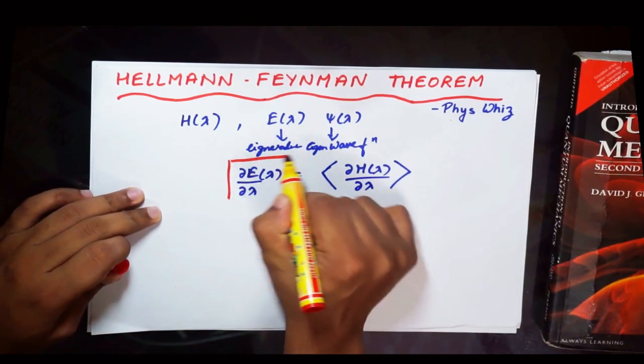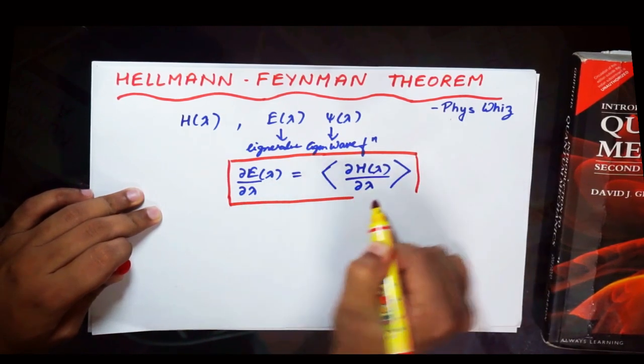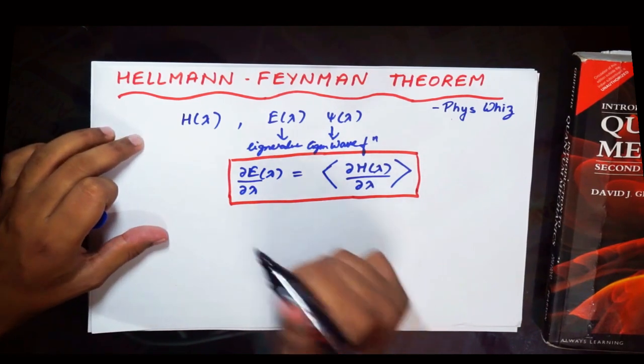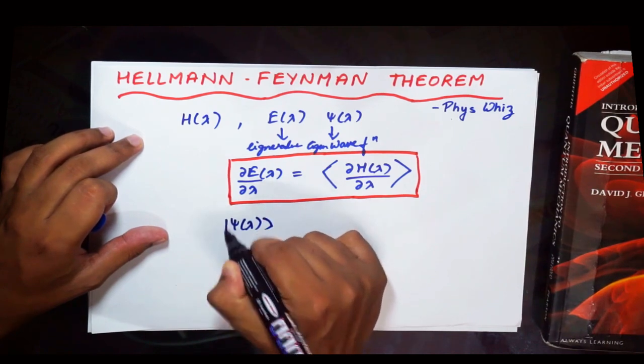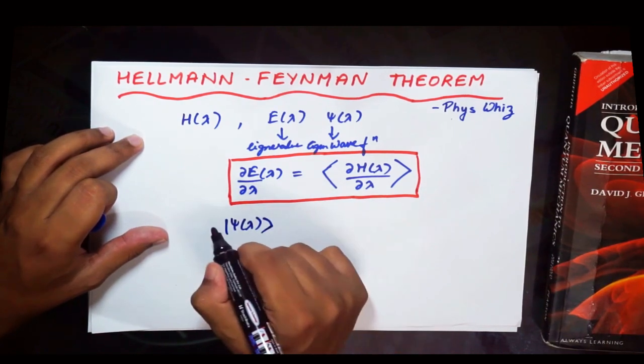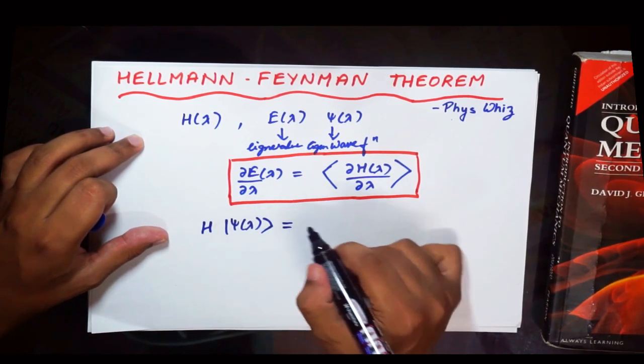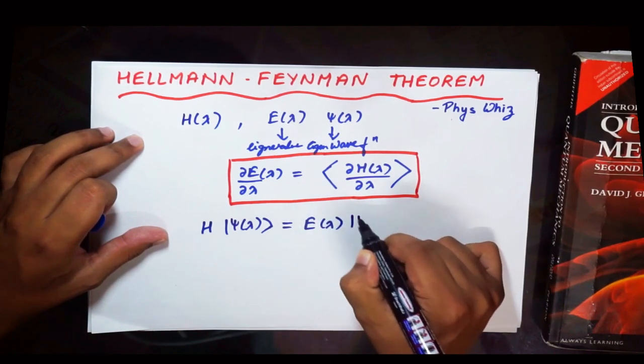And in this tutorial we're going to do a quick derivation of this. So in order to derive it, just consider psi of lambda to be the eigen wave functions of the Hamiltonian. Therefore we can write it as H psi is equal to E of lambda psi lambda.